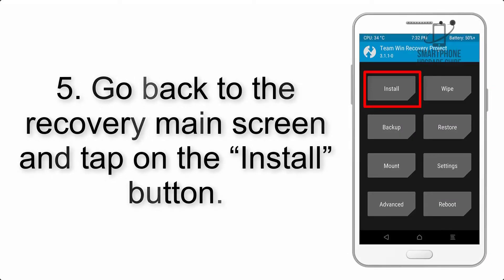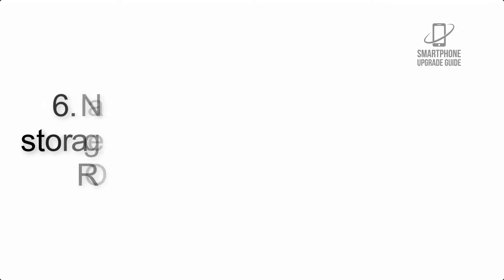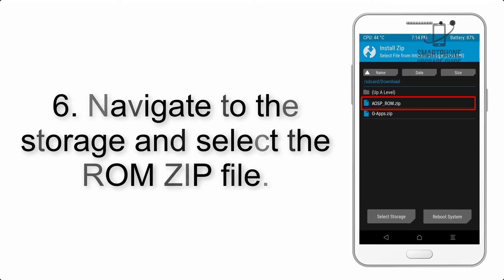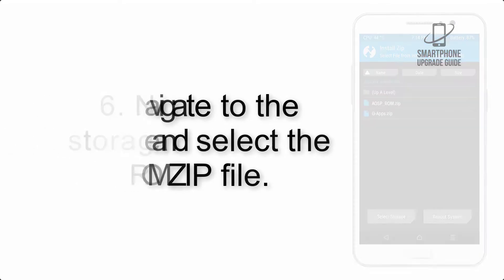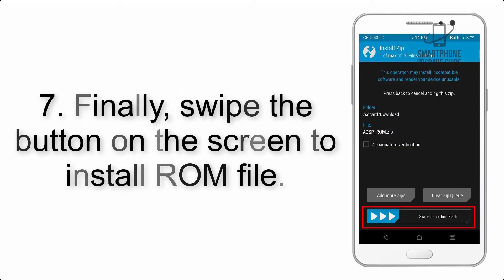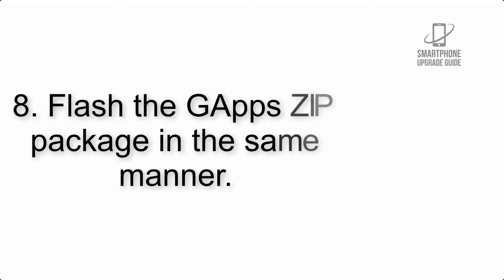Step 5: Go back to the recovery main screen and tap on the Install button. Step 6: Navigate to the storage and select the ROM zip file. Step 7: Finally, swipe the button on the screen to install the ROM file.